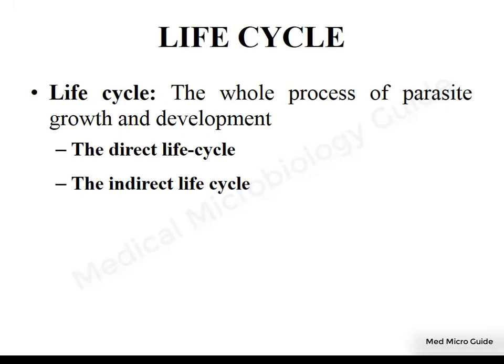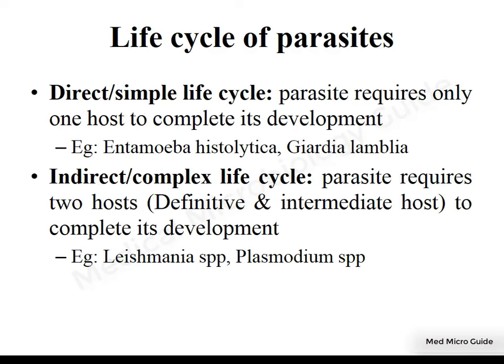Now let's briefly see how parasites complete their life cycle. A life cycle is a process of parasite growth and development. This can be of two types: a direct life cycle or an indirect life cycle. In the direct life cycle, the parasite requires only one host and completes its development in that host, then is transmitted to another host without an intermediate host. Example: Entamoeba histolytica.